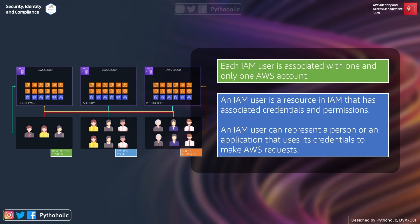Each IAM user is associated with one and only one AWS account. If you're part of a development team, your organization may have a development AWS account, and there may be 10 to 15 other teams with separate dev accounts. Rather than creating the same user across all accounts, the same user can assume a role and access resources from other accounts using STS — Security Token Service — which provides a temporary session or token-based login.